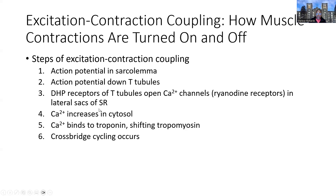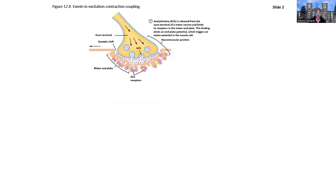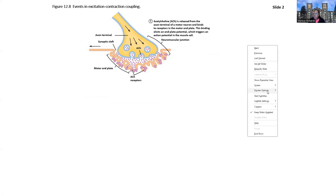Calcium will then enter the cytosol, it will bind to troponin, and just as we described, it will result in cross-bridge cycling or contraction. So let's begin a step-by-step illustration of that process.